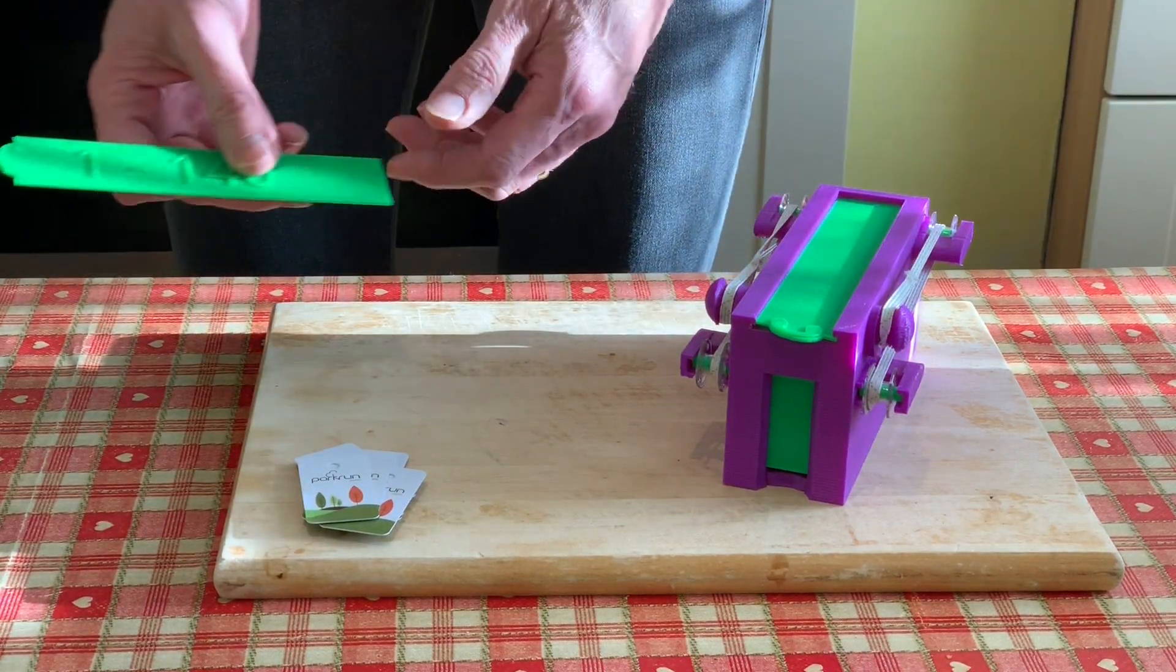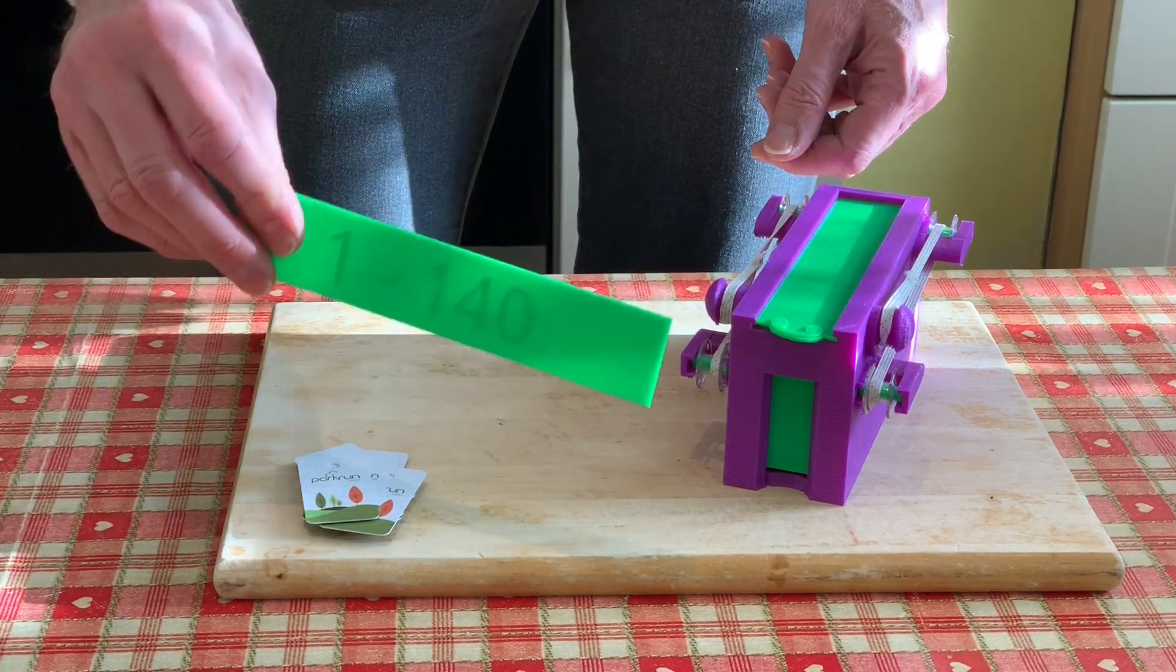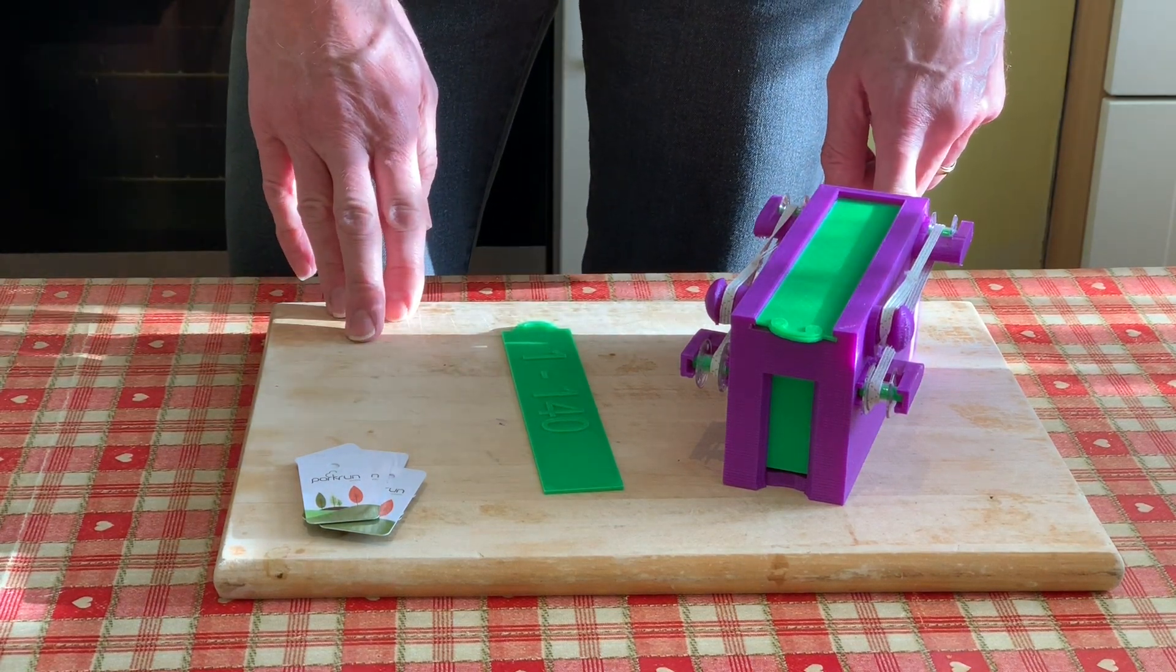We've also got lids with different numbering on, so we can put the numbers pertaining to what tokens are in each box, so it's easy to identify.